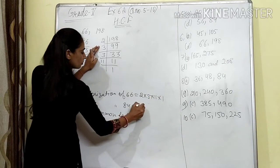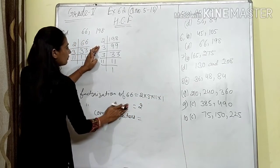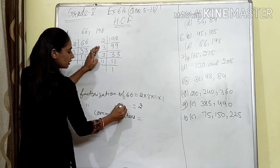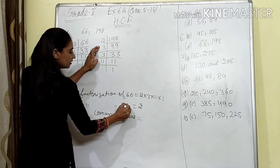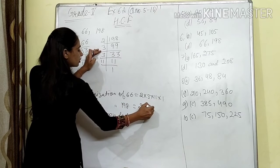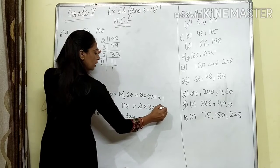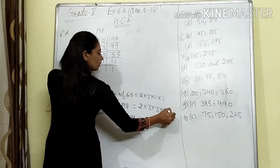Now for 198: last digit is even, so divisible by 2. Two nines are 18. Then 99 is divisible by 3 — three threes are 9, three threes are 9, then 11 ones are 11, and 11 ones are 1. Prime factorization of 198 is 2 × 3 × 3 × 11 × 1.